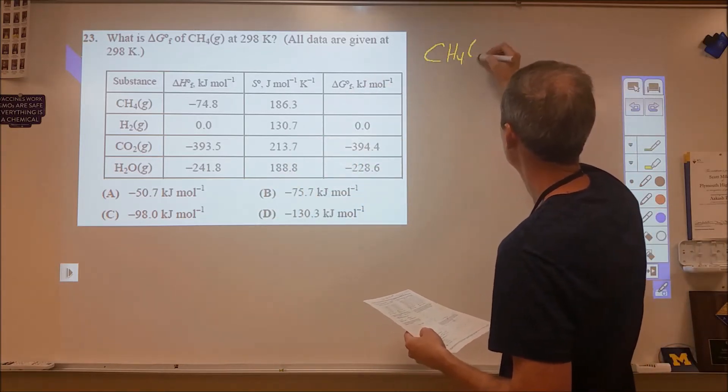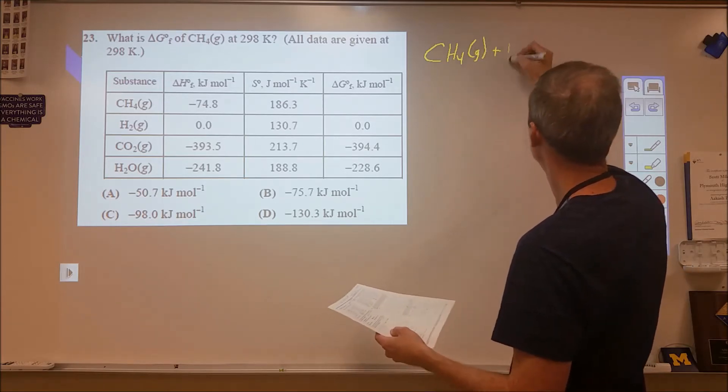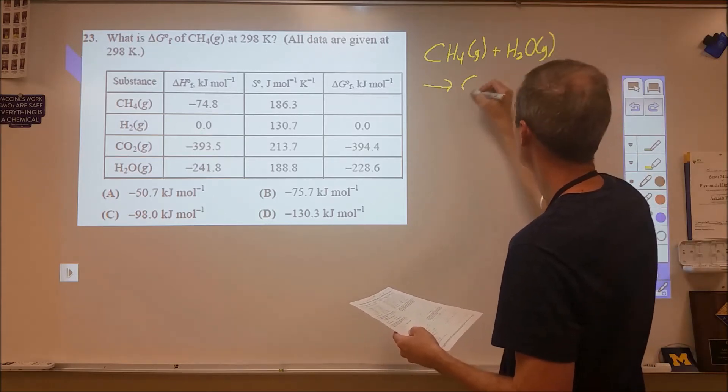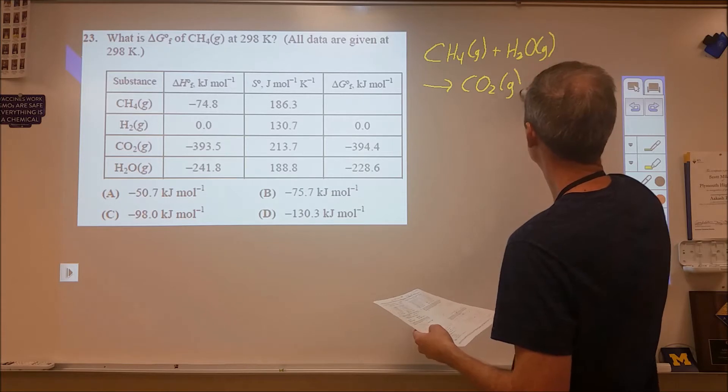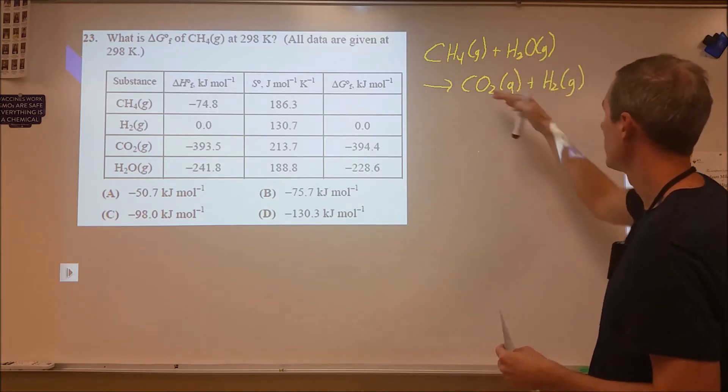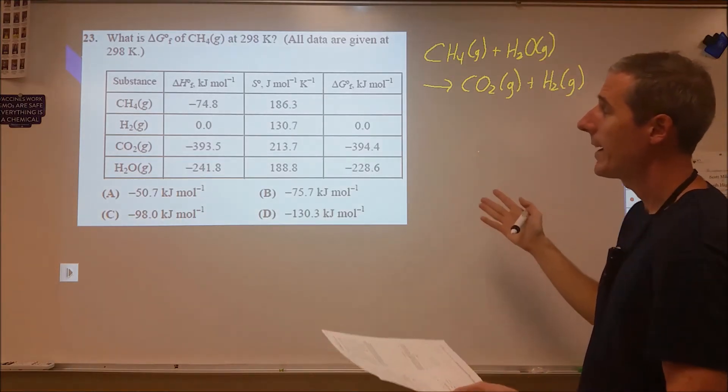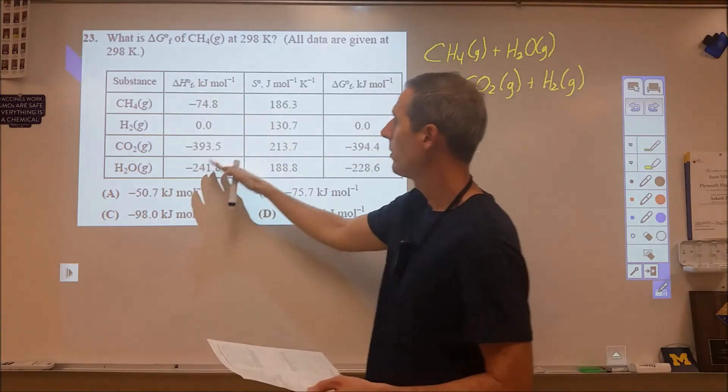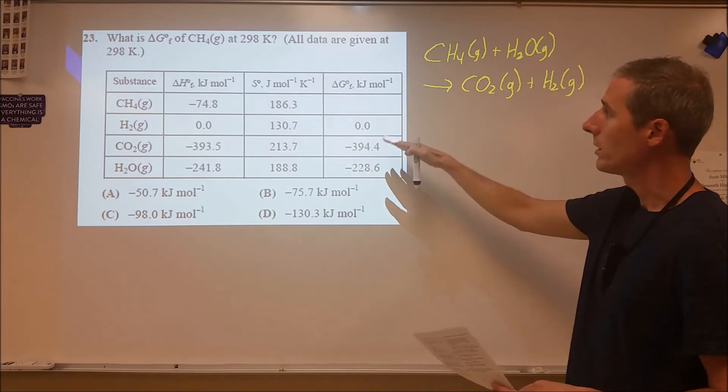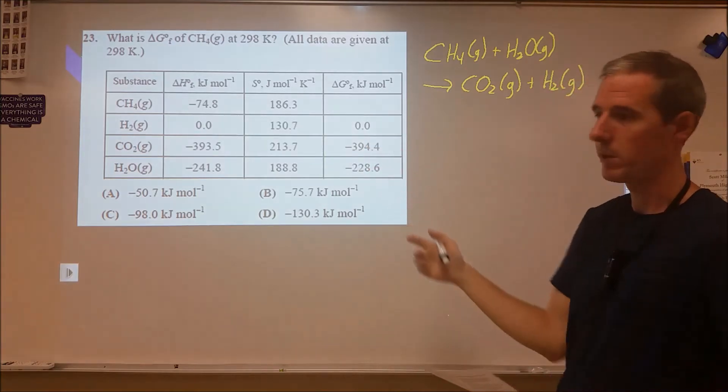That's going to be the methane gas reacting with steam, and then that's going to turn into carbon dioxide and hydrogen. So an oxidation reduction, where this is getting oxidized, this is getting reduced. Beyond that, what we now need to do is figure out what the total entropy of reaction is, then use delta G equals delta H minus T delta S, find the total of the Gibbs free energy and then work backwards to find that missing value.